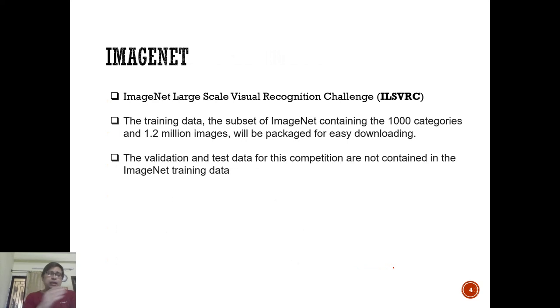LeNet5 had around 60,000 parameters whereas AlexNet had 6 million parameters - a hundred times more. The paper describing this AlexNet architecture has more than 70,000 citations by now. Now let's look at the ImageNet dataset, which is very important because when you're trying to establish superiority of an algorithm, you need a proper test bed.